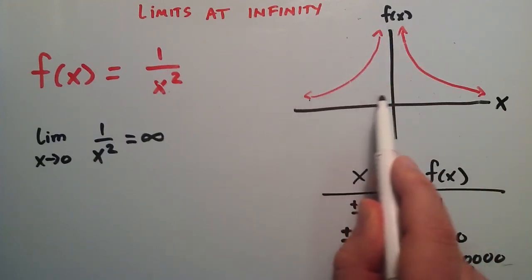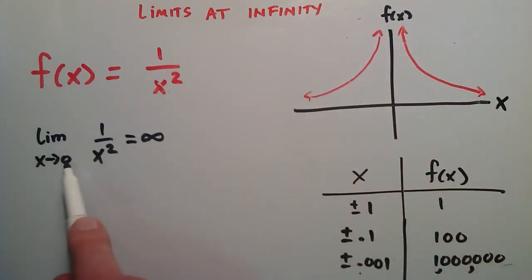But as we get closer to it, as we take the limit, we can describe the limit as x approaches 0 as infinity. This means that the closer we get to 0, the bigger the corresponding f(x) value becomes.